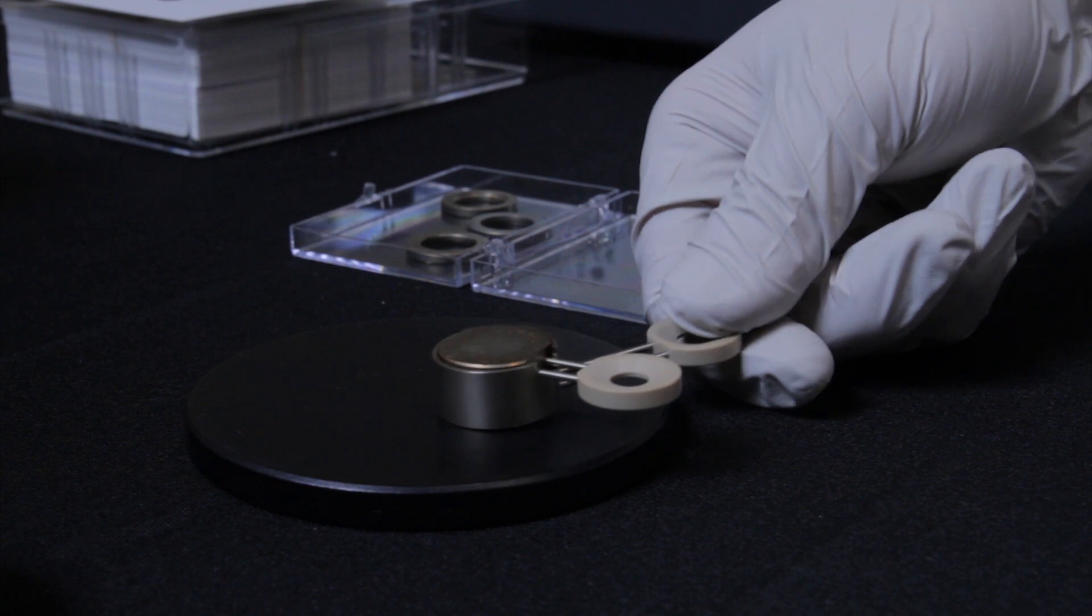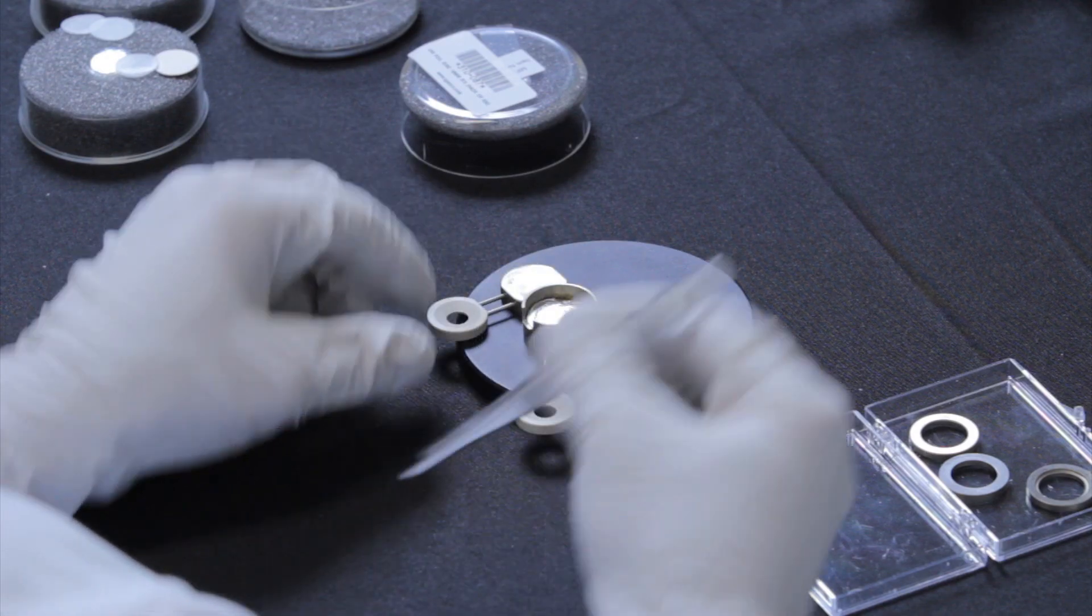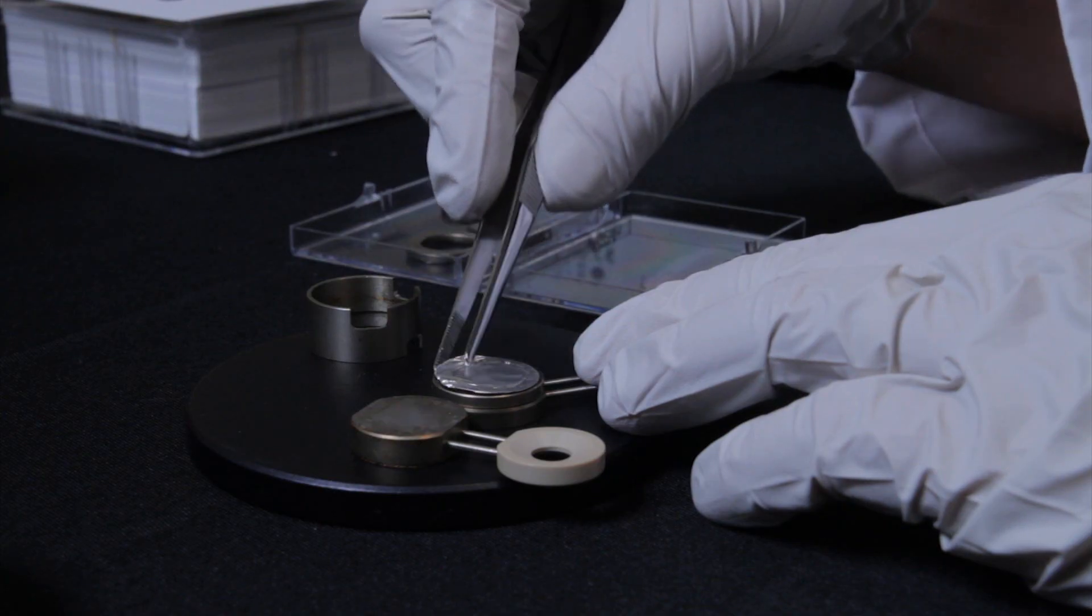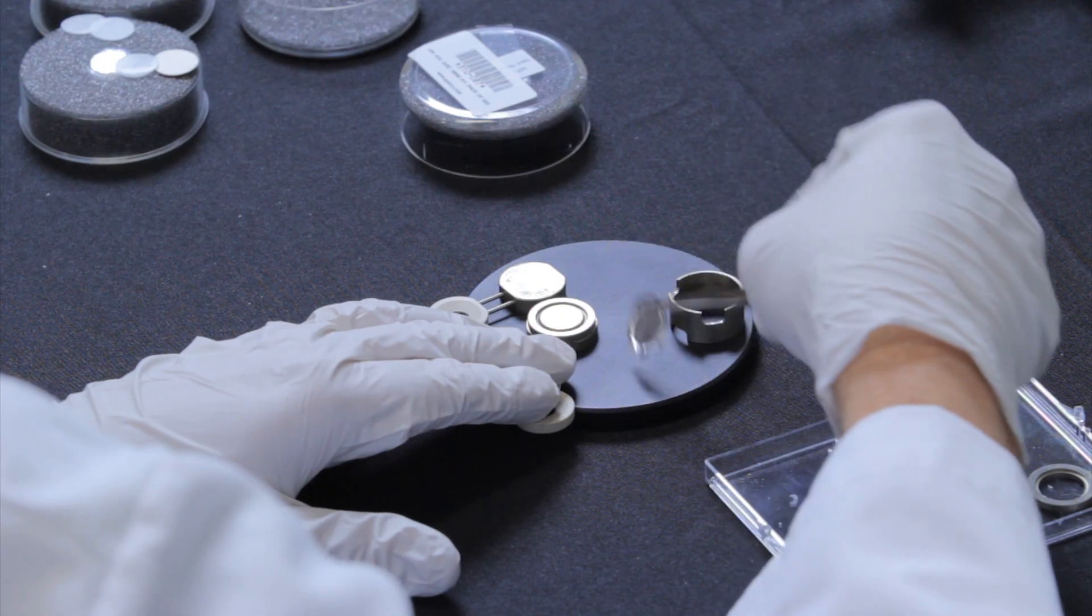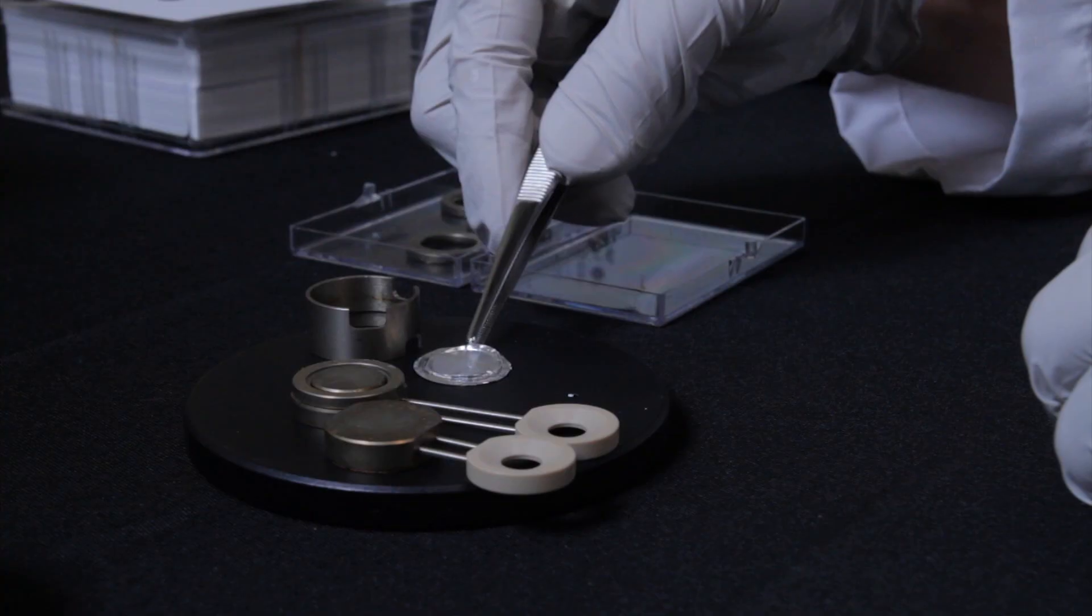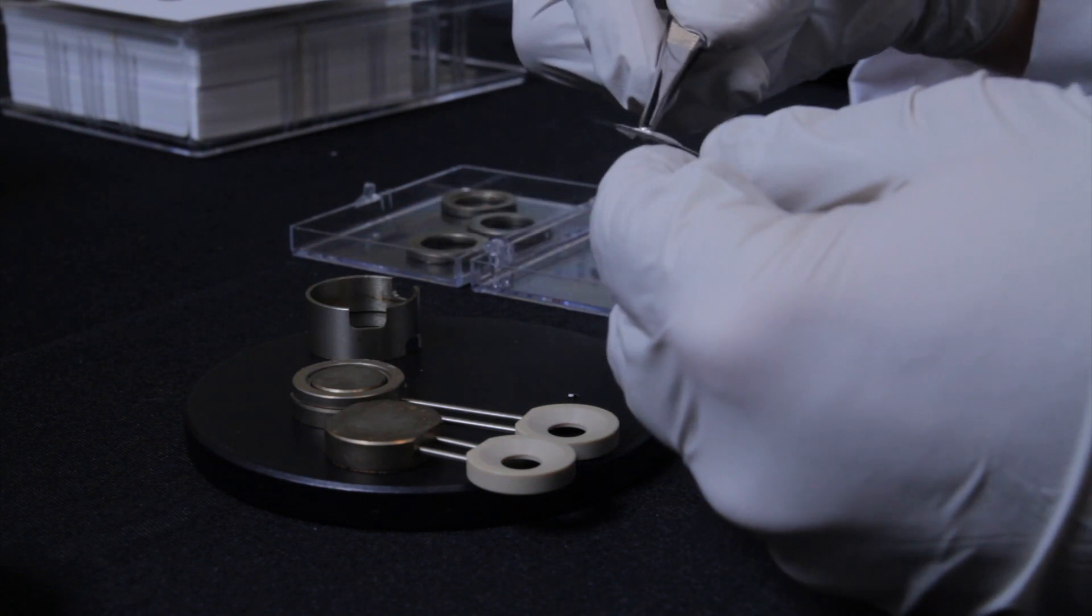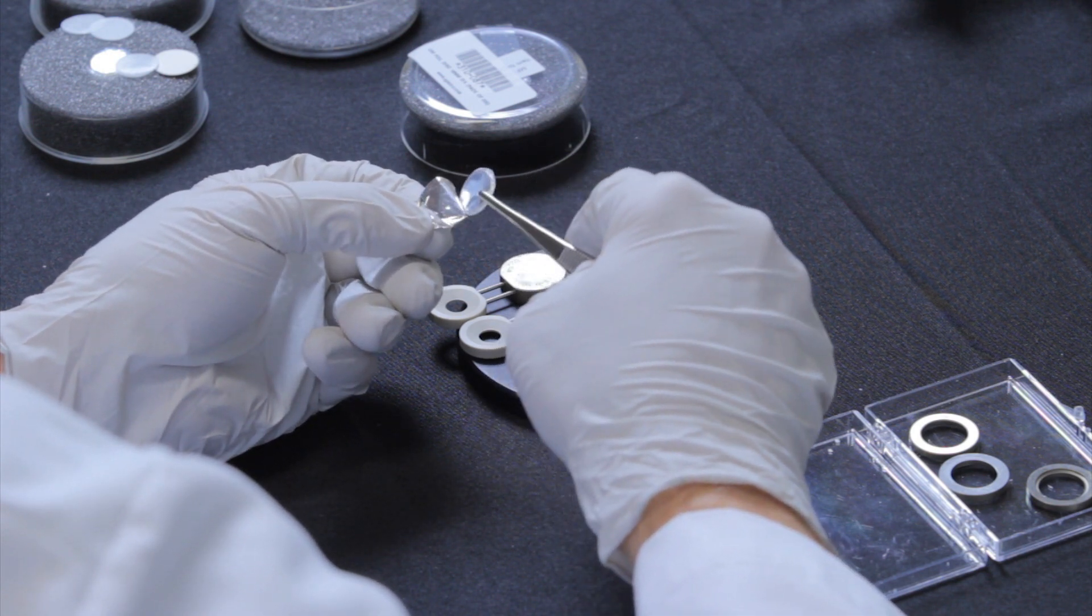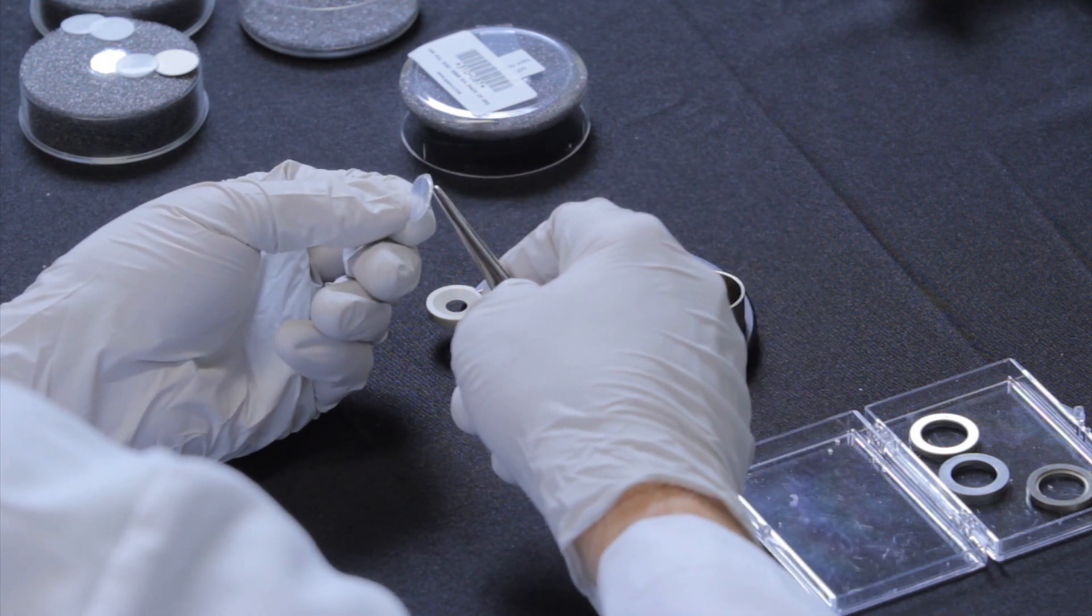Once the film is pressed, we take the apparatus out of the filmmaker and disassemble it. The film is pressed between the two foils. Once we remove the foil, you'll be able to recover the film.